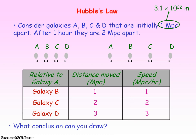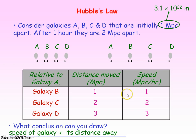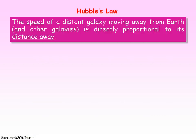This shows that the speed of a galaxy is directly proportional to its distance away — and this is Hubble's law. Hubble's law states that the speed of a galaxy moving away from Earth is directly proportional to its distance away.